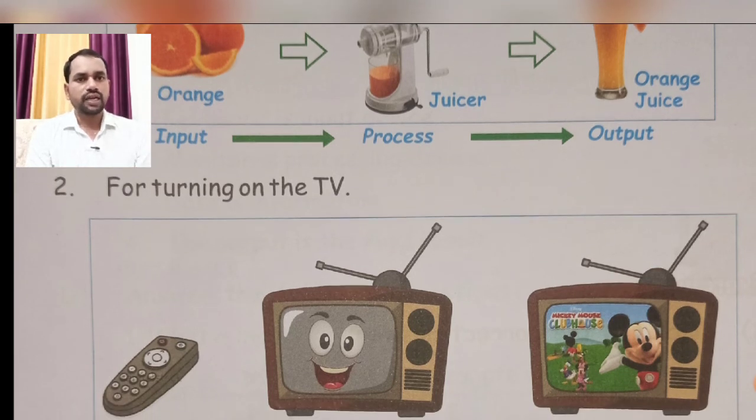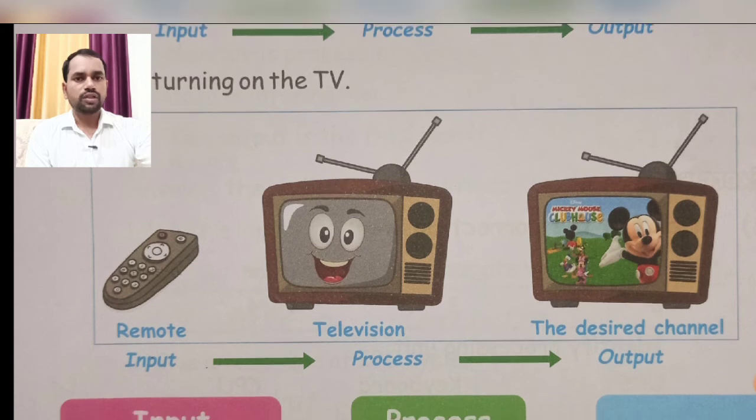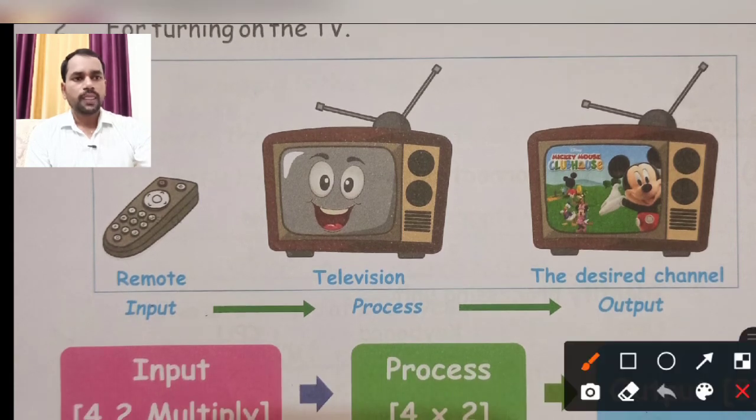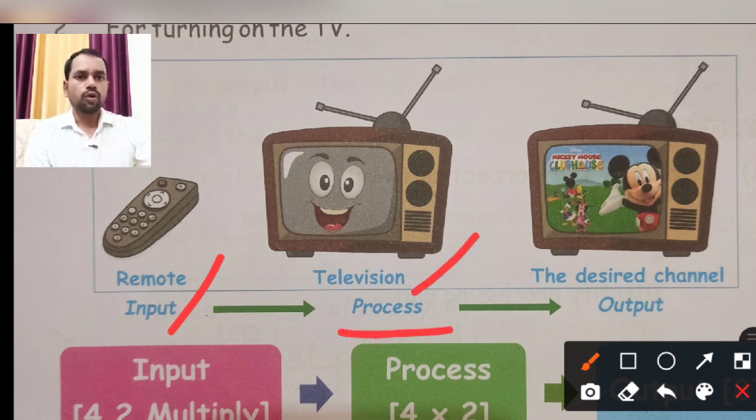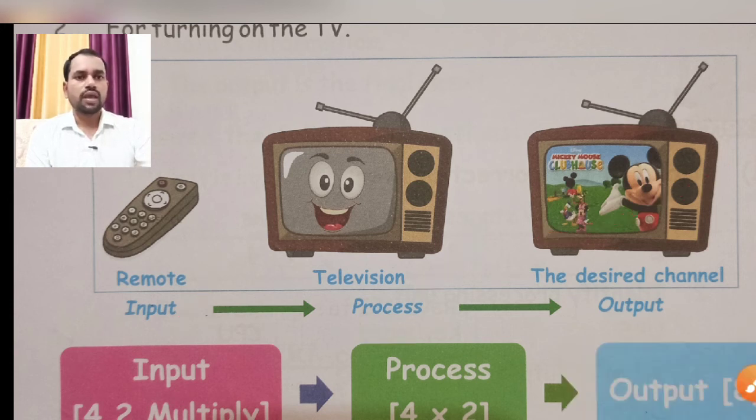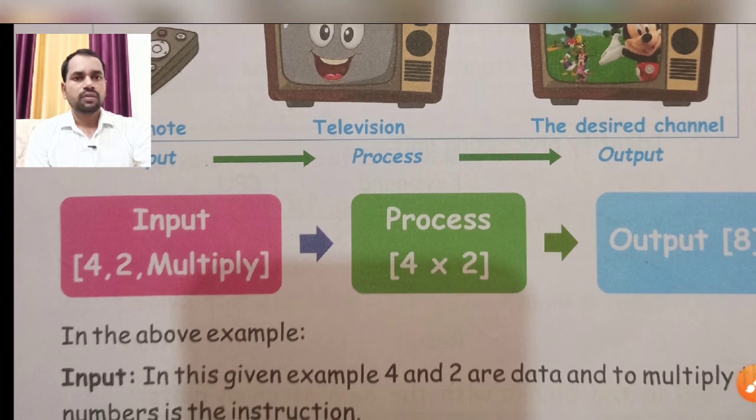Second point: for turning on the television. Input is we select the channels, then the processing is on through the remote and system, then the channels start. This is the process and output.